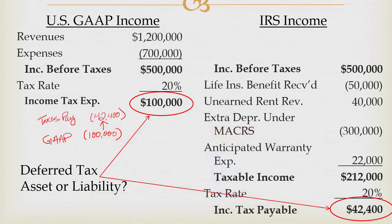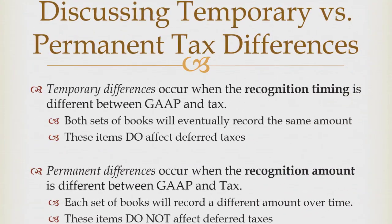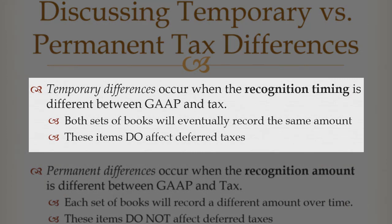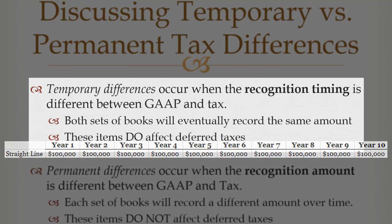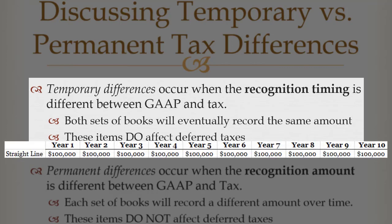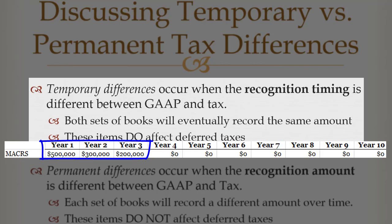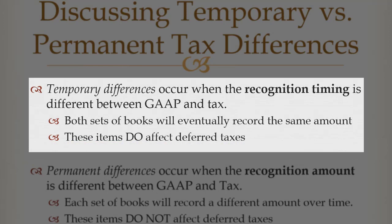Before we continue on talking about methods and steps, there's one more discussion we need to have — the difference between temporary and permanent differences. A temporary difference is a difference in the recognition timing between GAAP and tax rules. For example, I have a $1 million machine: under straight-line depreciation I amortize it $100,000 per year for 10 years. Under tax rules using MACRS tables I take $500,000 in year one, $300,000 in year two, $200,000 in year three, and zero for the rest. The totals are the same — $1 million — but the timing is different.